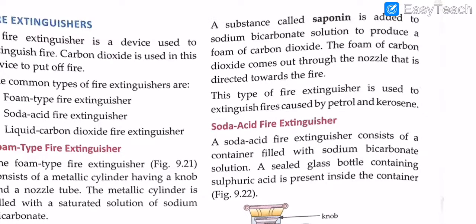A substance called saponin is added to the sodium bicarbonate solution. The sodium bicarbonate present inside the metallic cylinder produces a foam of carbon dioxide — it's not exactly gas, it's a foam-like substance. The foam of carbon dioxide comes out through the nozzle directed towards the fire. This type of fire extinguisher is used to extinguish fires caused by petrol and kerosene. That is why it is known as a foam-type fire extinguisher.